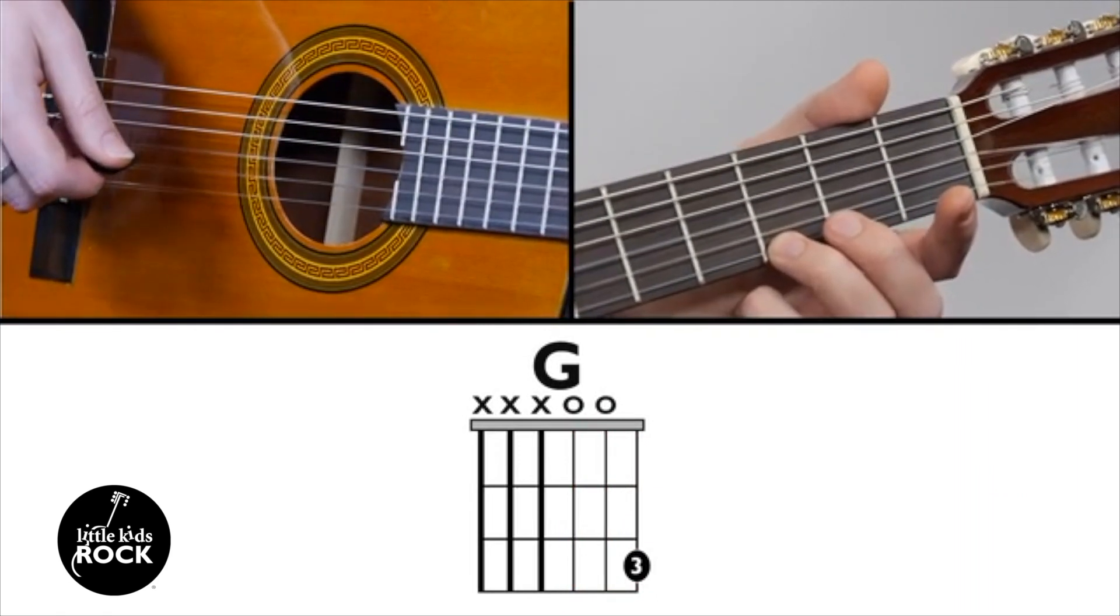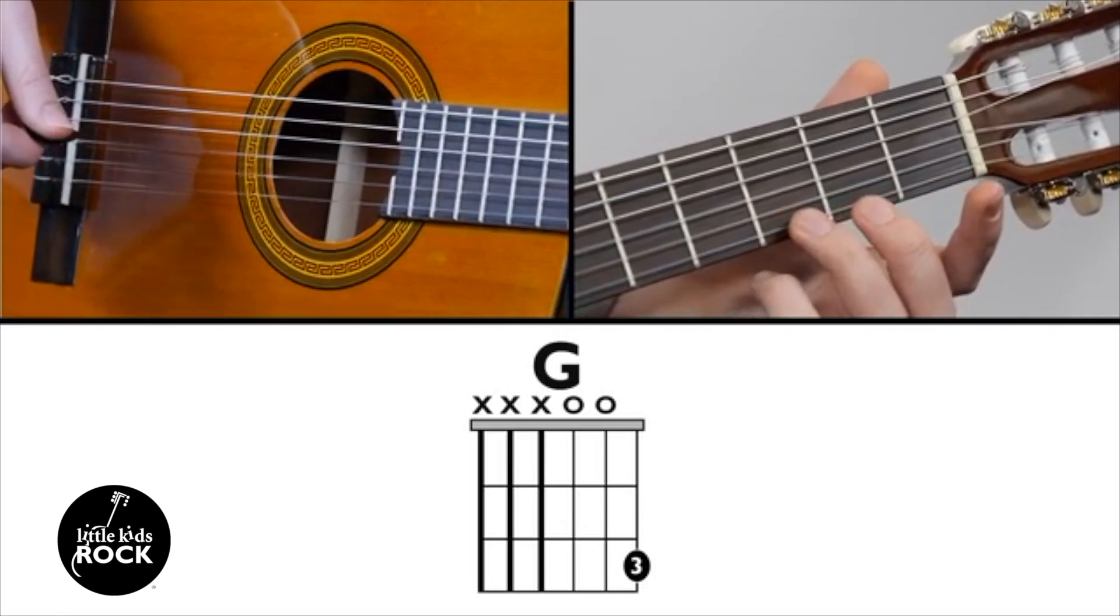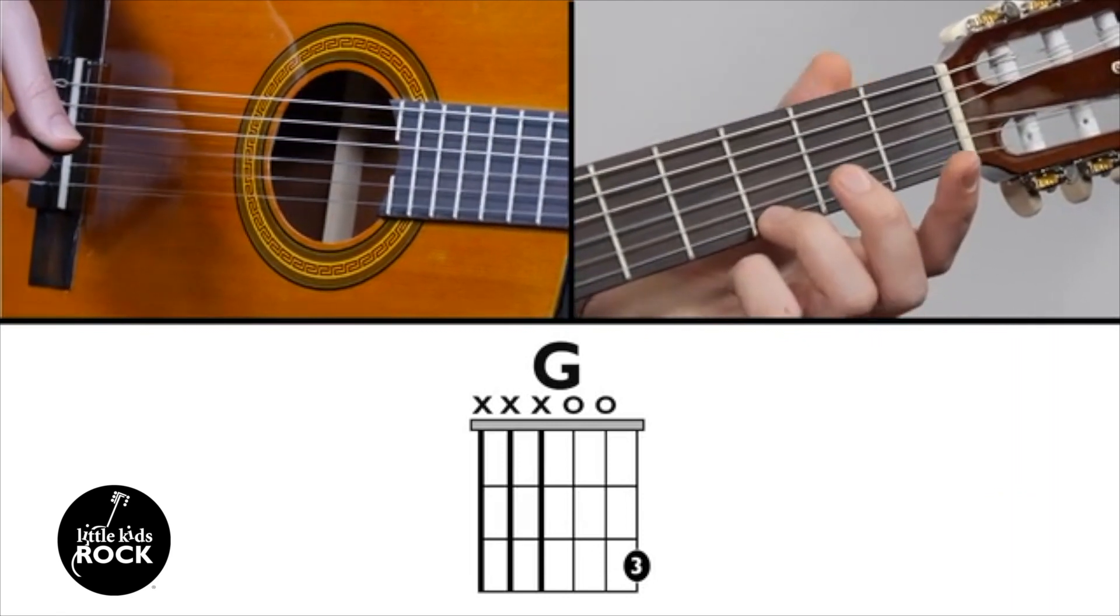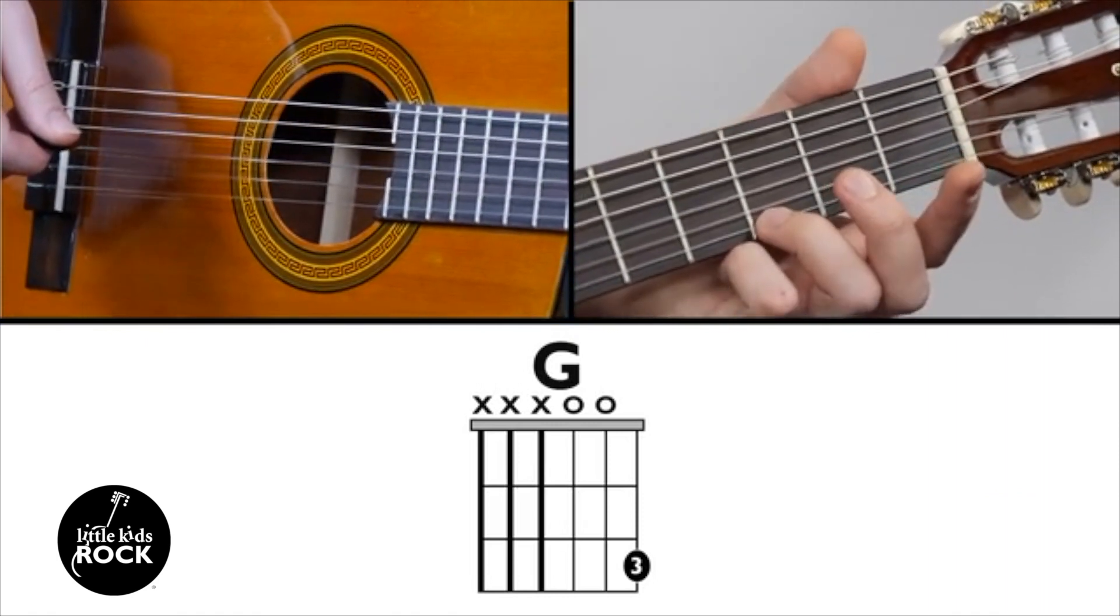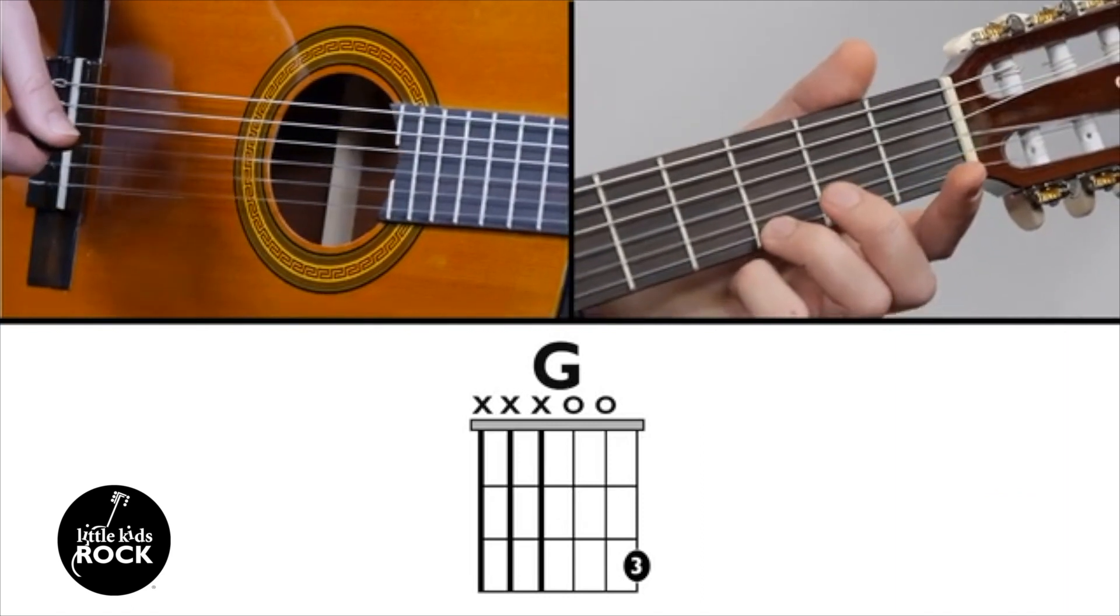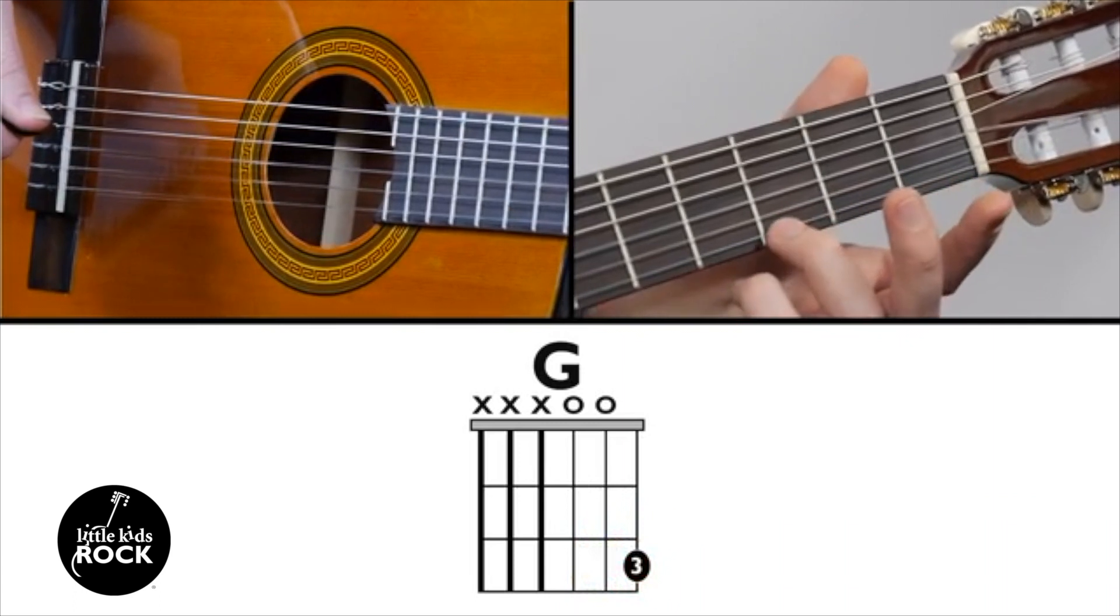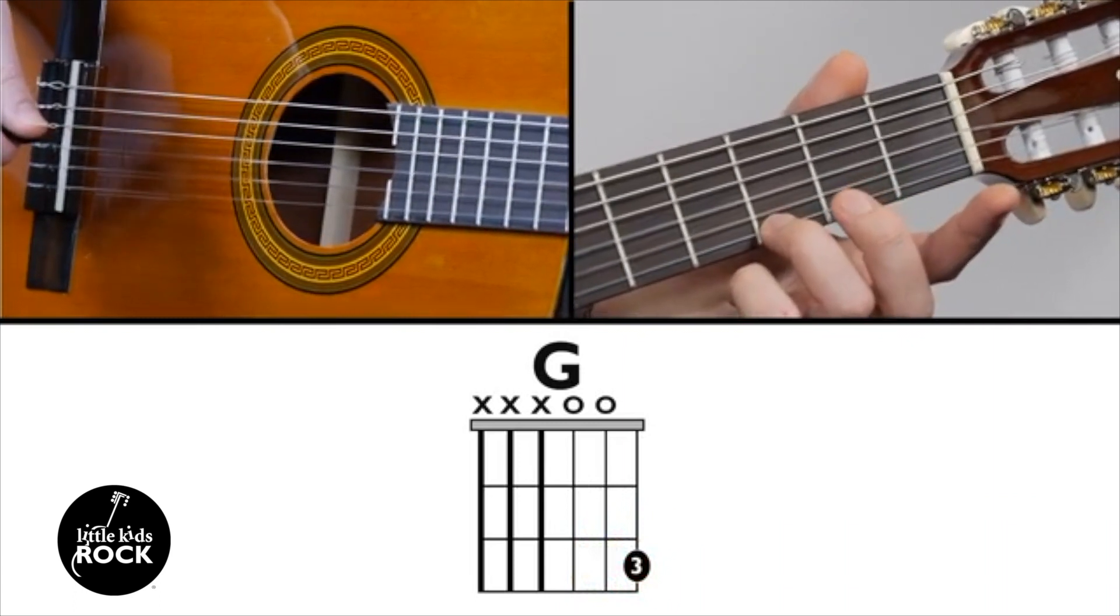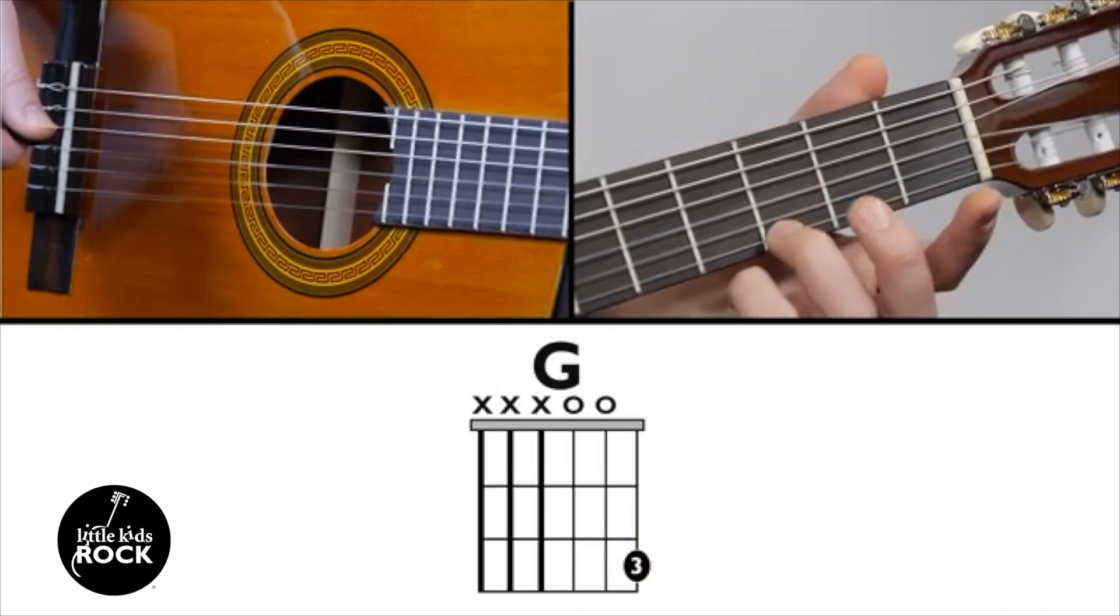I want you to take a look at this chord diagram, this is the easy G chord diagram, and see how it looks the same way that your fingers look. As you can see on the first string, there is a black dot on the third fret, and there's a three inside of it. That is exactly where you put your finger, and the three tells you to use your third finger.